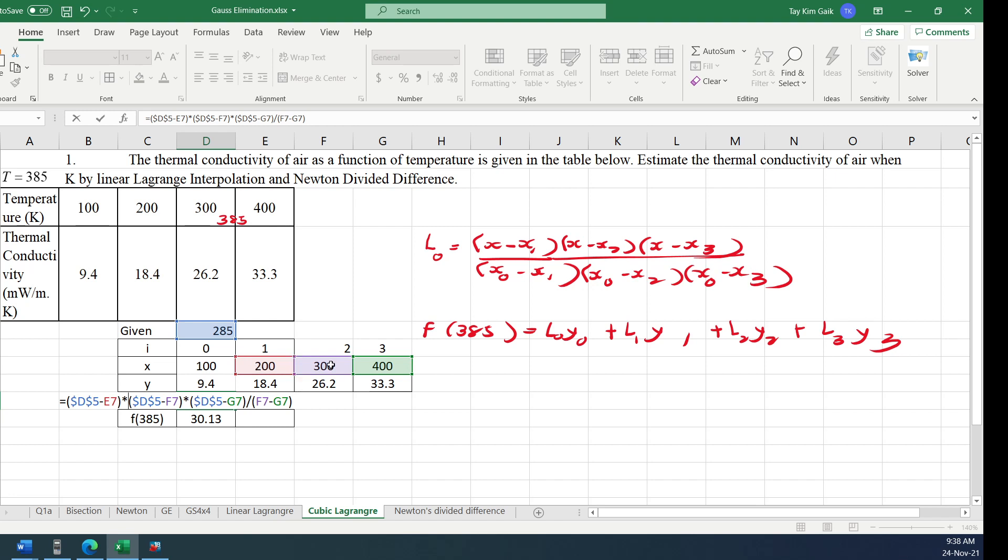For Excel, for multiplication, make sure the asterisk there. So the x minus x1, x minus x2, x minus x3. And then denominator, you can copy the numerator that you have keyed in, Ctrl C.